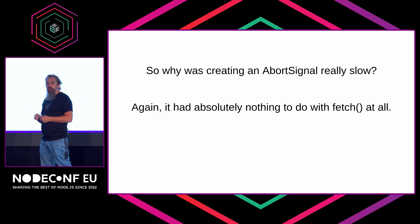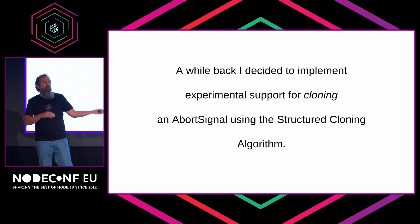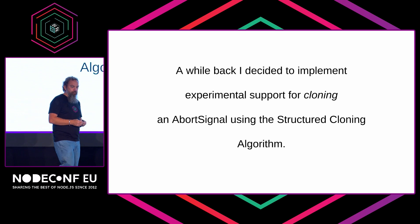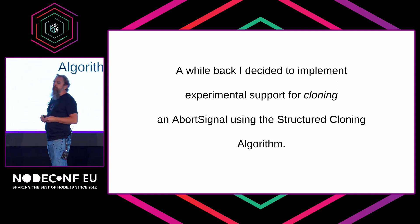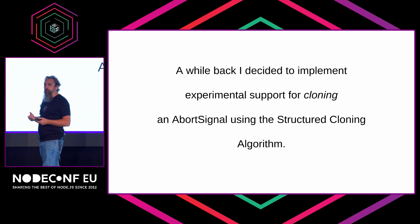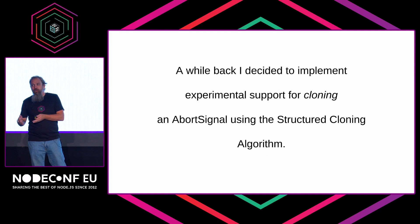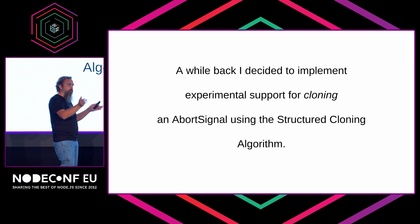So why was creating it so slow? It actually had to do with another experiment, another bit of code that I contributed — I think it was 2020. On a completely unrelated topic, we had this idea of cloning an AbortSignal. What do I mean by cloning? If you are using worker threads in Node and you want to send a value from one worker thread to the other, you use the postMessage API — you create the other worker, you want to send an object over, postMessage that object, and it sends.